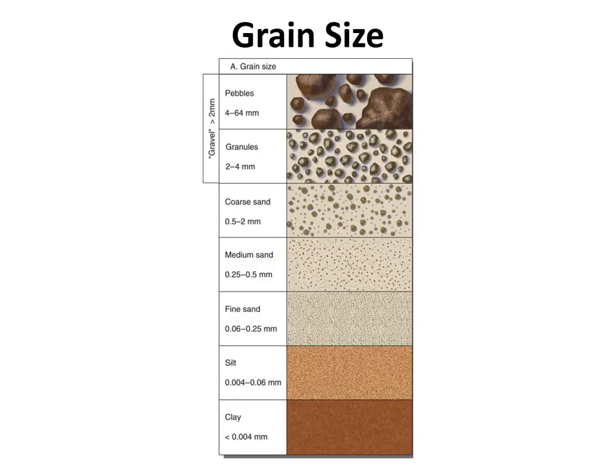There's an actual scale that geologists use when going into an area to study sediment. It's called a Wentworth scale — an index card-sized scale that shows changes to grain size, grain shape, and grain sorting. The texture of a sedimentary rock is based on those three things: size, shape, and sorting.